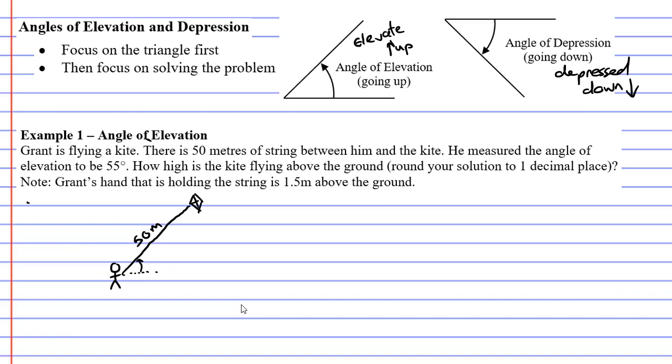Angles of elevation go up, so this angle is 55 degrees. Let's carry on with the dotted line. Like I mentioned, you've got to focus on the triangle first, so we've really got to construct some sort of right-angled triangle. Now in the question—we've already focused on getting the triangle right.